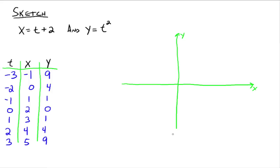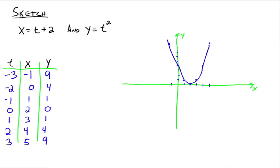That's good enough for now — if we need more we'll come back. So now we just go plot the points; you're only plotting the ordered pairs, the x-y values. So (−1, 9) is up here, (0, 4) is there, (1, 1), (2, 0), (3, 1), (4, 4), and (5, 9) is up here. When you connect the dots, you get this parabola.